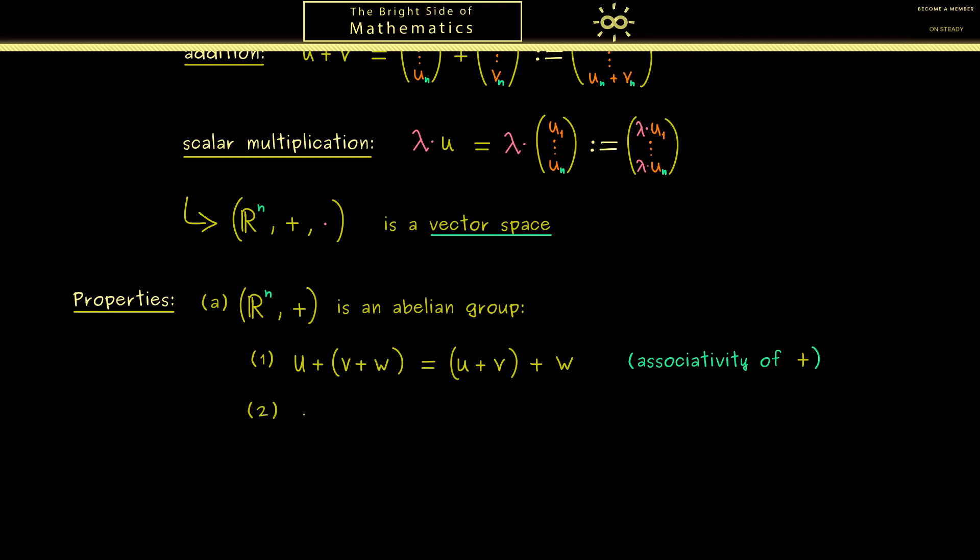Then the next property is that we have an identity element. More precisely, this means we have a vector 0 which does not change the vector v. And of course, this 0 here is just a zero vector that has zeros in all components. Hence this zero vector is our neutral element with respect to the addition, which means it does not change the vector at all.